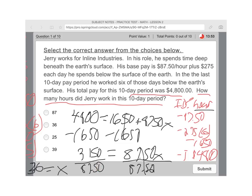And then $3,150 divided by $87.50 equals 36. So X equals 36, 36 hours. Okay, now we come back over here. And we click on 36.